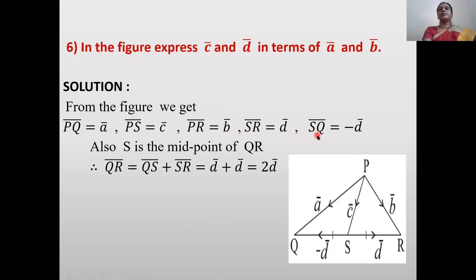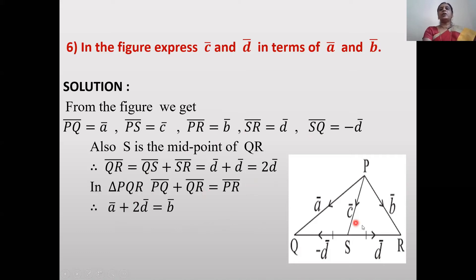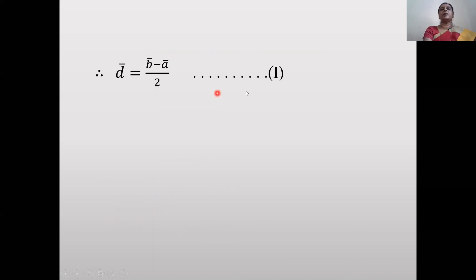Since S is midpoint of QR: QR̄ = QS̄ + SR̄. SQ̄ = -d̄, so QS̄ = +d̄. Therefore QR̄ = d̄ + d̄ = 2d̄. In triangle PQR: PQ̄ + QR̄ = PR̄, so ā + 2d̄ = b̄, giving d̄ = (b̄ - ā)/2. Suppose this is equation 1.